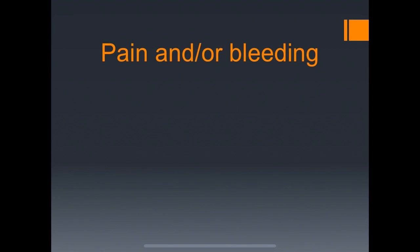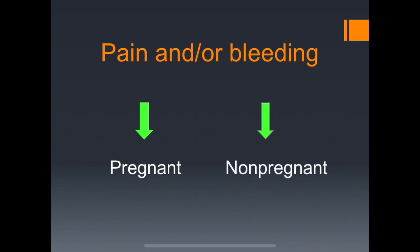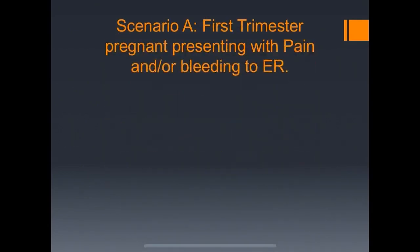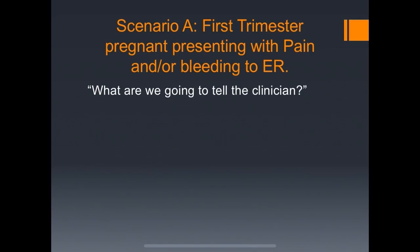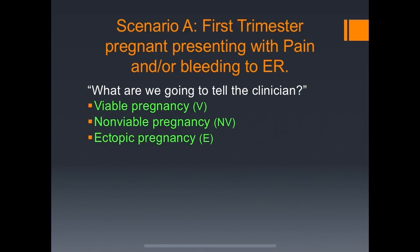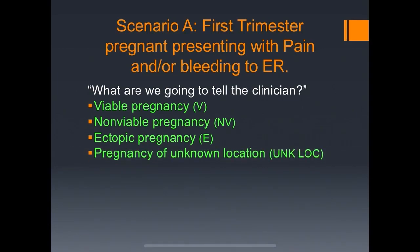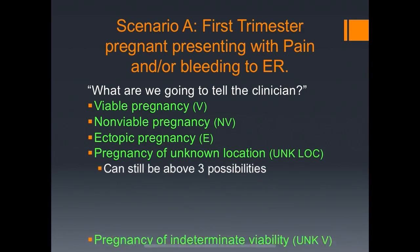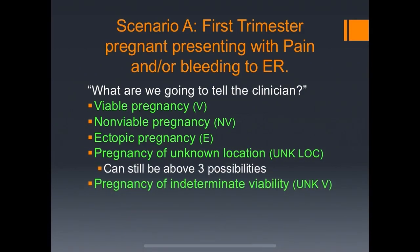We want to differentiate whether these patients are pregnant or non-pregnant. We'll look at both scenarios, the first being the first trimester pregnancy coming in with pain and/or bleeding. The clinician wants to know: is it a viable pregnancy, a non-viable pregnancy, an ectopic pregnancy, a pregnancy of unknown location, or a pregnancy of indeterminate viability — meaning either viable versus non-viable?